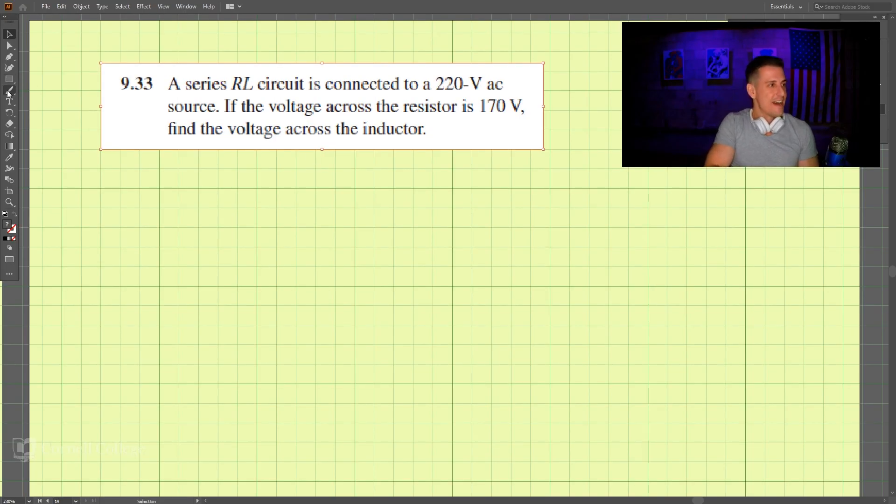This is problem 933, and we have an RL circuit. It looks something like this: we have a 220 volt AC source, and then we have a resistor and an inductor.